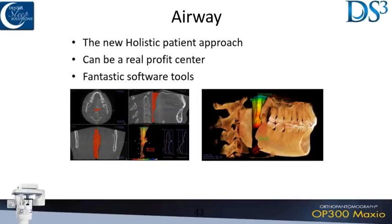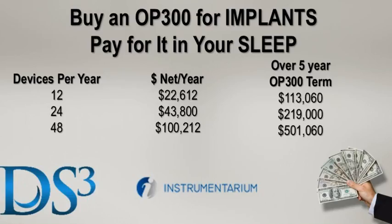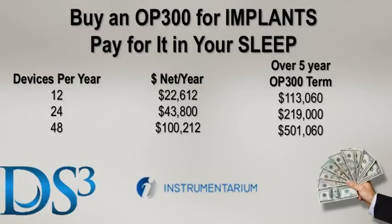When it comes to airway — you can pay for this machine literally over the span of your loan with sleep cases. If you do $2,500 a case — a moderate amount for dental sleep — and you do one a month, over five years you'll make enough to roughly pay for your machine just in sleep revenue. If you do two a month, you'll actually pay for the machine and have another $100,000 left over. If you do roughly one a week, you'll add a half million dollars to your practice over five years.